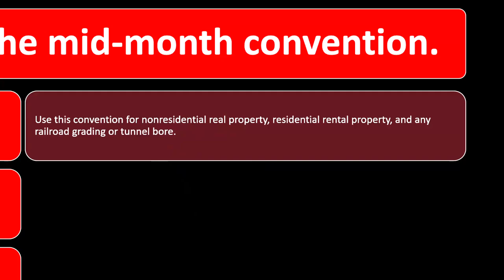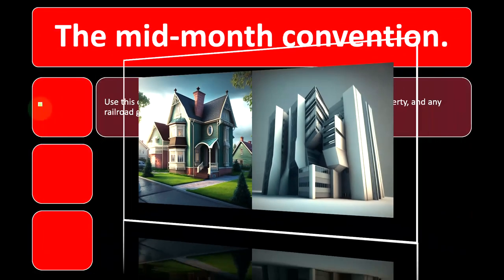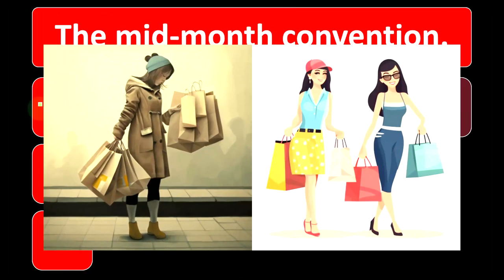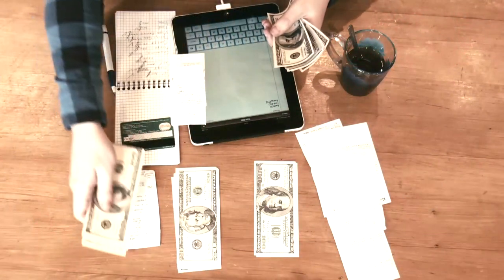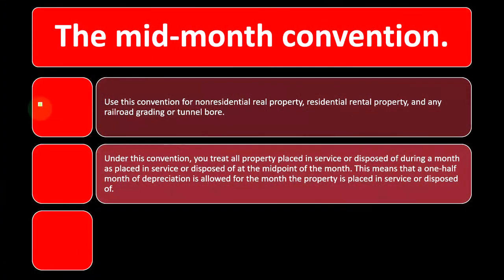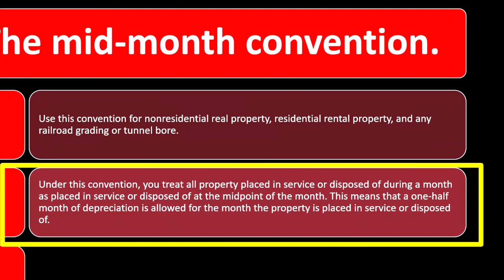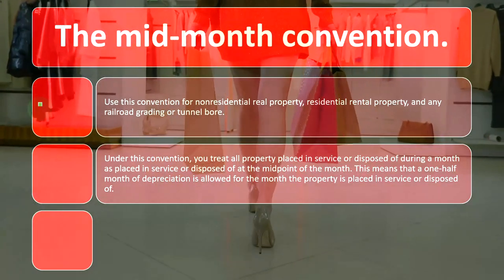For these types of property, instead of using the exact purchase date — say, February 3rd — you treat it as if it was bought in the middle of February, right at the midpoint of the month. Under this convention, all property placed in service or disposed of during a month is treated as placed in service or disposed of at the midpoint of that month, making it slightly easier to calculate than breaking out each individual day.